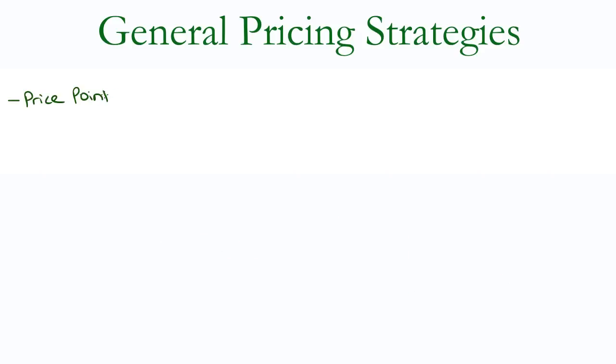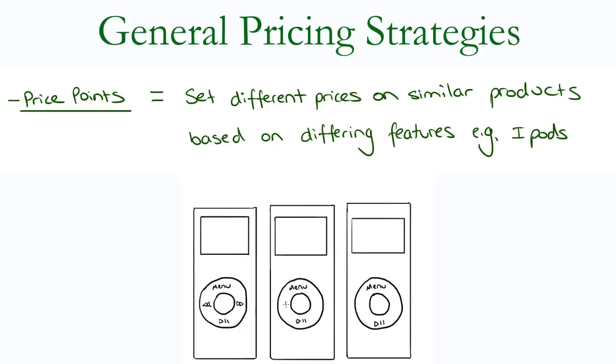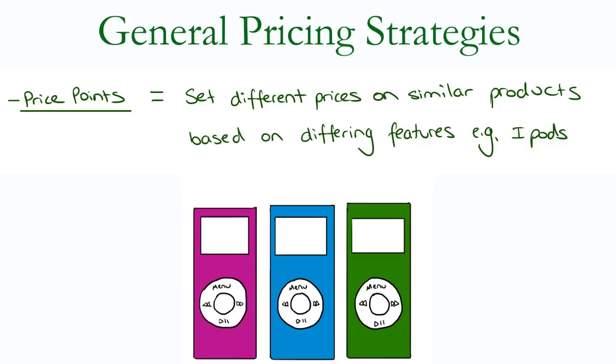Thirdly, price points, where a business sets different prices for similar products that are differentiated by their features. Imagine a row of iPods in a store. They look identical, for example, they have the same shape and color, but they have different prices because one has 8GB of memory, one has 16GB of memory and one has 32GB of memory. That's price points.